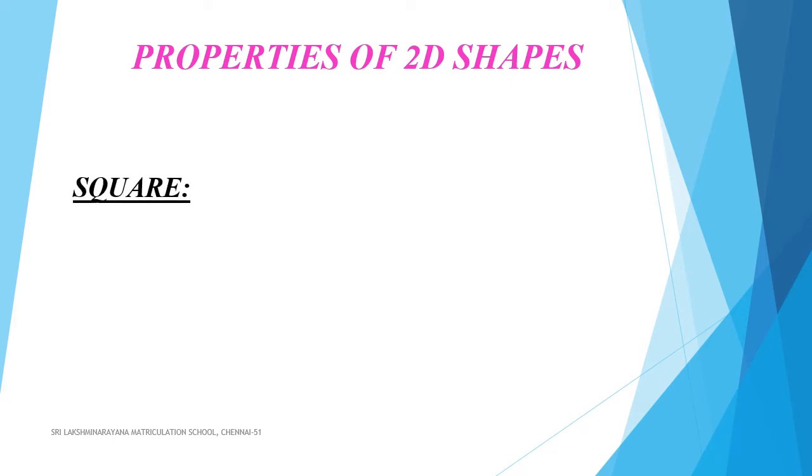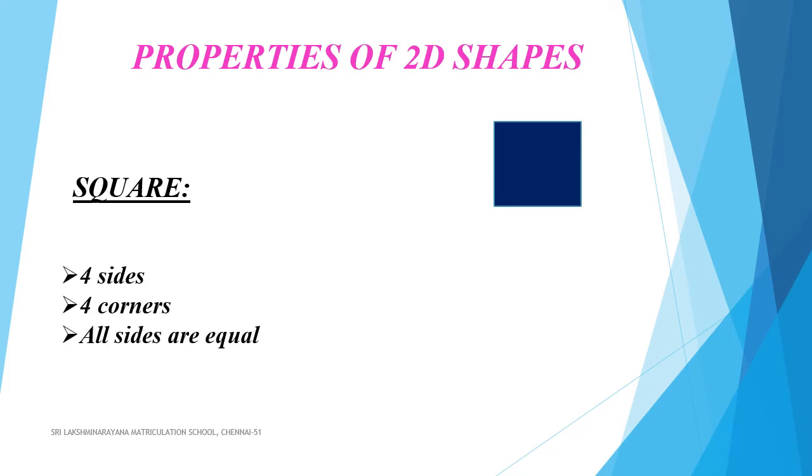Properties of 2D shapes. First one is square. This is square. It has four sides and four corners. All sides are equal.